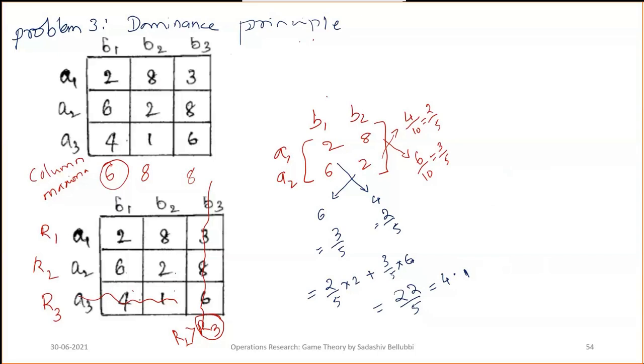This is how we reduce the matrix using the dominance principle and find the value of the game. Thank you.